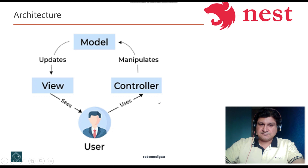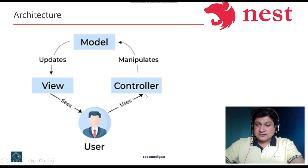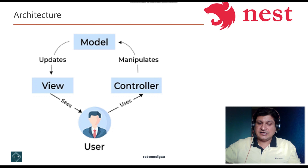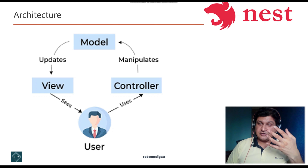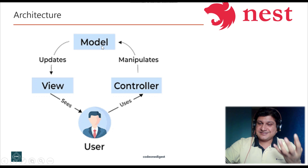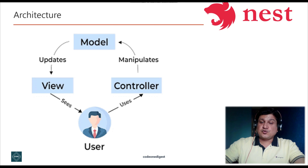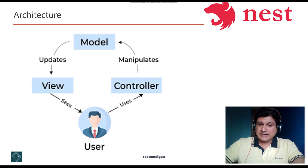Let's understand this with a diagram. When I as a user make a request — say https://amazon.com — that request hits a controller. The controller says the user is requesting information for the home page. It makes a call to the business layer, which calls the repository layer to prepare the data object — that is the model. Then the controller decides which UI component displays this data, sends the model to the view component, and that view goes as a response to the user.